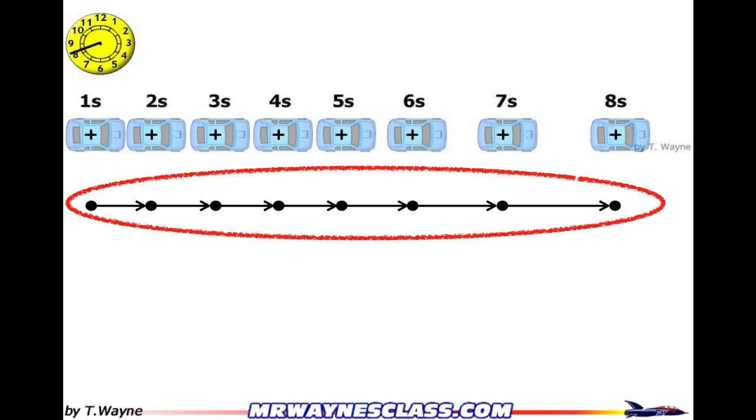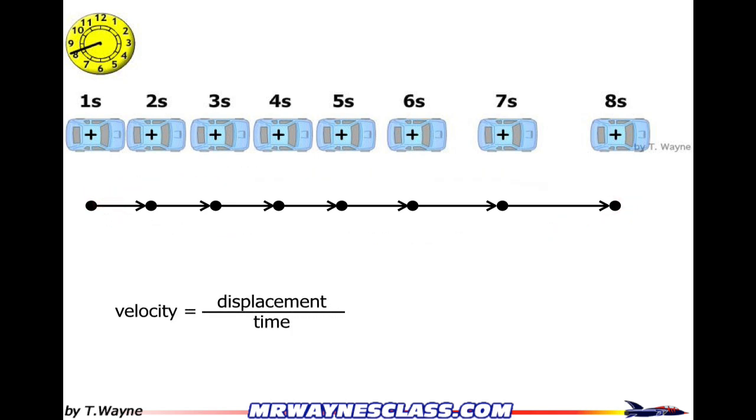Okay, now let's look at some things we can get off this motion diagram. First off, the velocity. So velocity is defined as displacement over time.